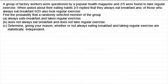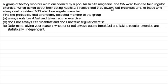In this tutorial I want to show you a typical question where you can answer it either by using a Venn diagram or a tree diagram. In this video I'm going to show you how you can answer it via a Venn diagram. A group of factory workers were questioned by a popular health magazine and two-fifths were found to take regular exercise. When asked about their eating habits, two-thirds replied that they always ate breakfast. And of those who always ate breakfast, nine-twenty-fifths also took regular exercise.